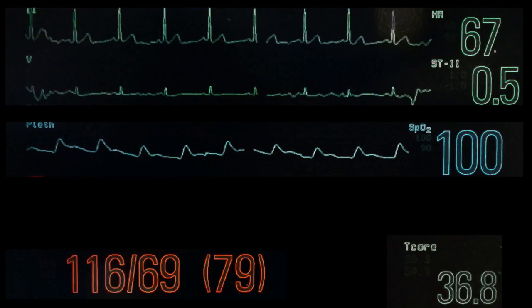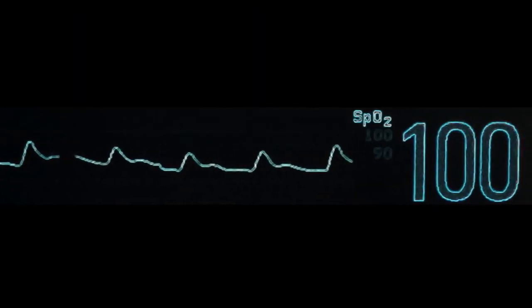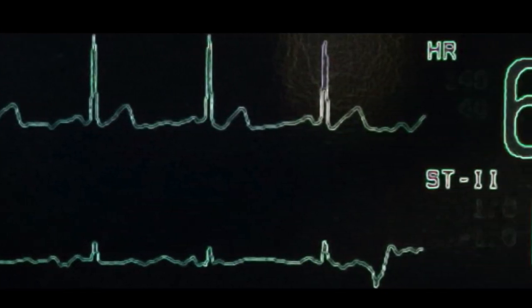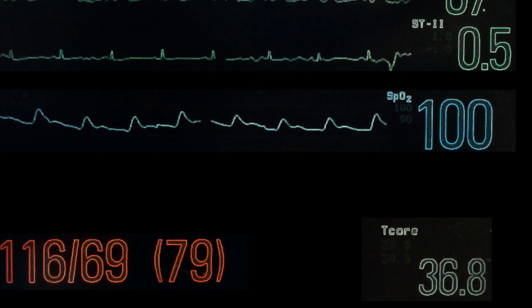While you are under anesthesia, the monitors we connected you to tell us how you are doing. The pulse oximeter tells us how well you're breathing. The blood pressure cuff gives us your blood pressure and the EKG wires show your heart rhythm and heart rate. We also monitor your temperature and we pay very close attention to these vital signs.